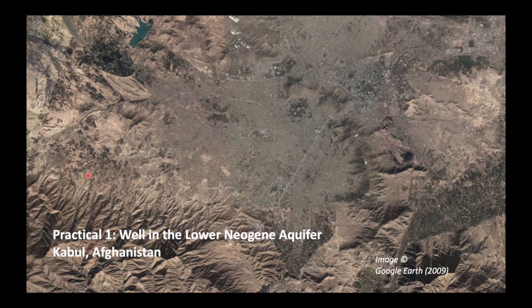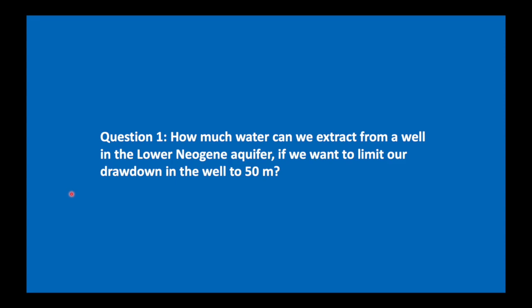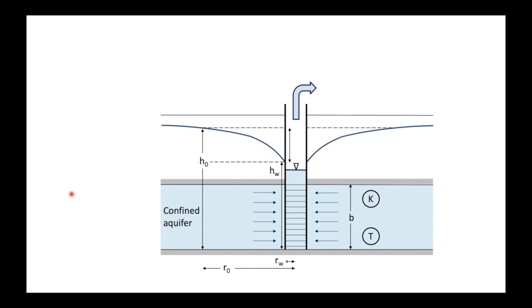Let's illustrate this with a practical example and let's go to Kabul, Afghanistan. My regards to everybody there who is suffering from coronavirus at the moment. I hope you make it and we can meet again soon. My first question is how much water can we extract from a well in the lower Neogene aquifer if we want to limit our drawdown in the well to 50 meters? There is a deep aquifer beneath Kabul that was studied for five years by a Japanese team paid by JICA. Here is our schematic of the aquifer, and basically what we want to know is what is the discharge q for a drawdown of 50 meters in the well.